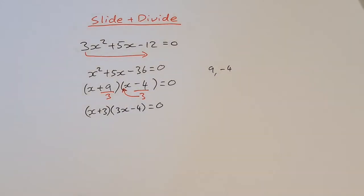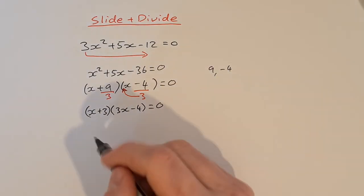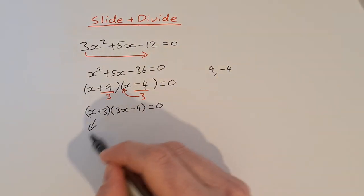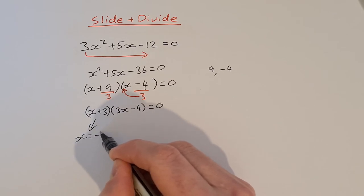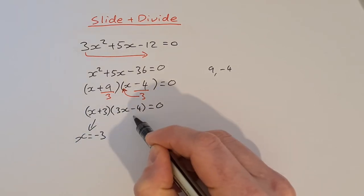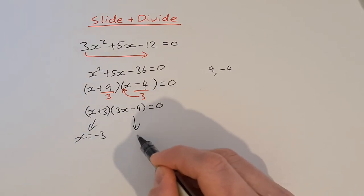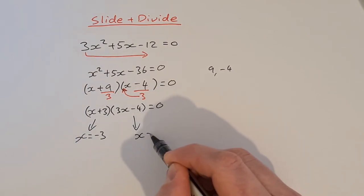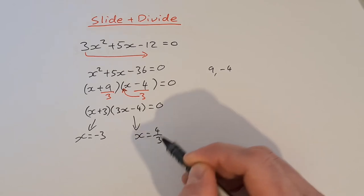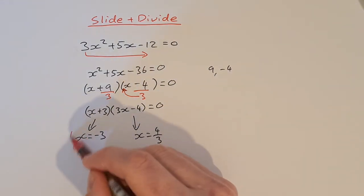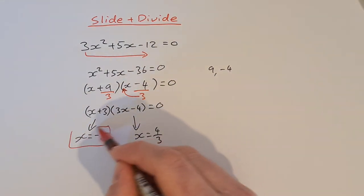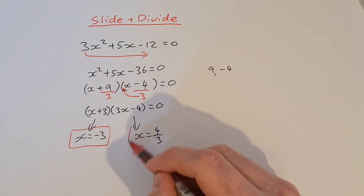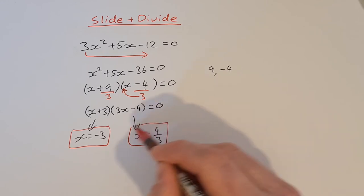And that's equal to zero — which you'll recognize is the same as what we got last time. So x is equal to minus 3 and x is equal to 4 over 3. Those are both our answers for the slide and divide method.